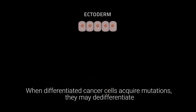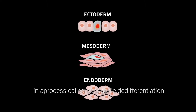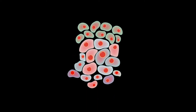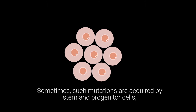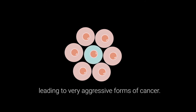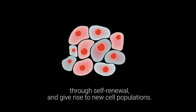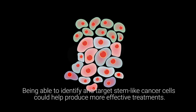When differentiated cancer cells acquire mutations, they may de-differentiate in a process called oncogenic de-differentiation. Sometimes such mutations are acquired by stem and progenitor cells, leading to very aggressive forms of cancer. Like normal embryonic stem cells, cancer stem cells perpetuate themselves through self-renewal and give rise to new cell populations.